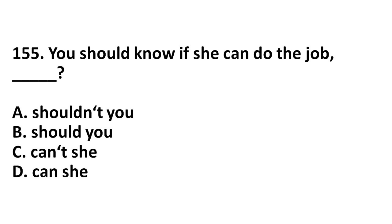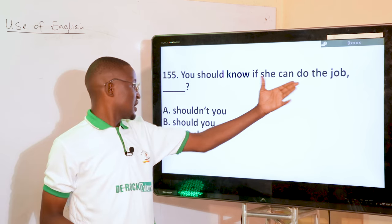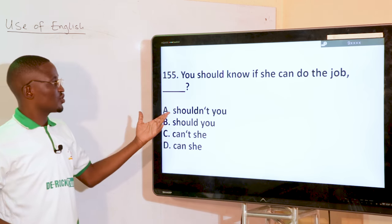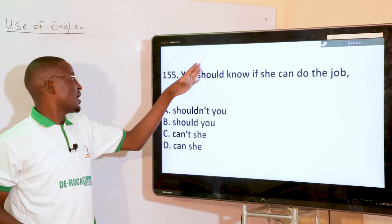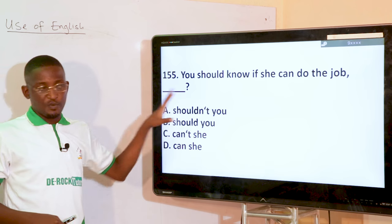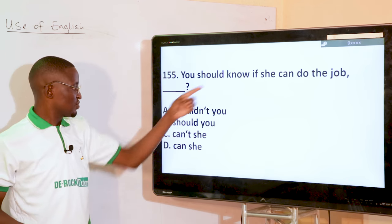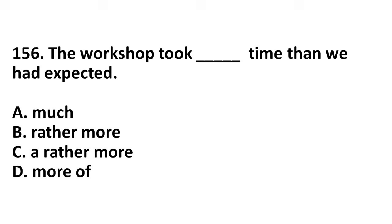You should know if she can do the job — there is a question tag. The rule says when you have a positive statement, the question tag should be negative. You have a positive statement using 'should,' so the tag should carry 'not' — 'Shouldn't you?'